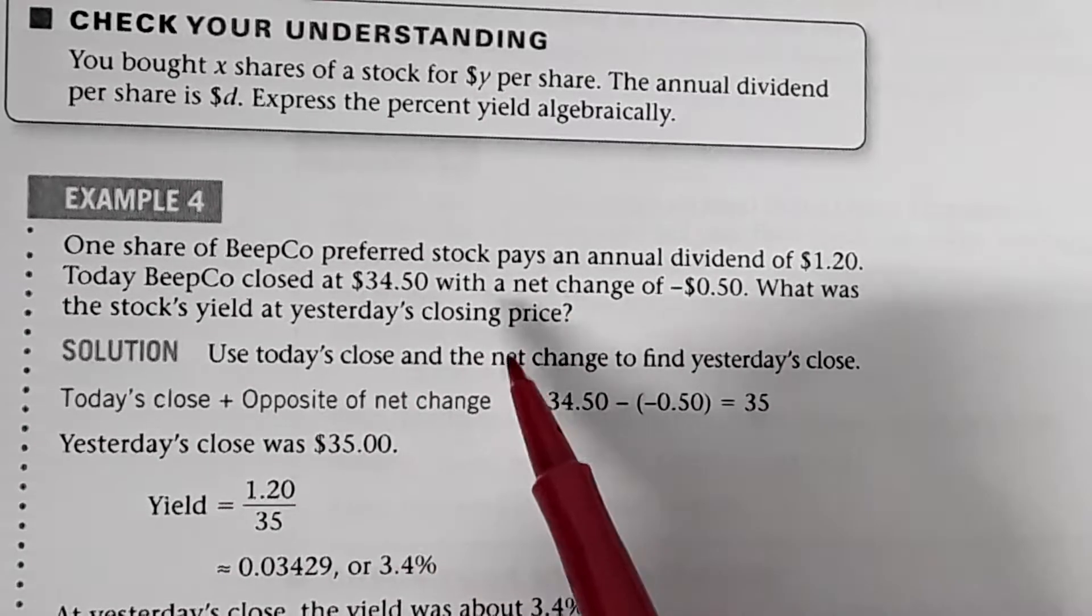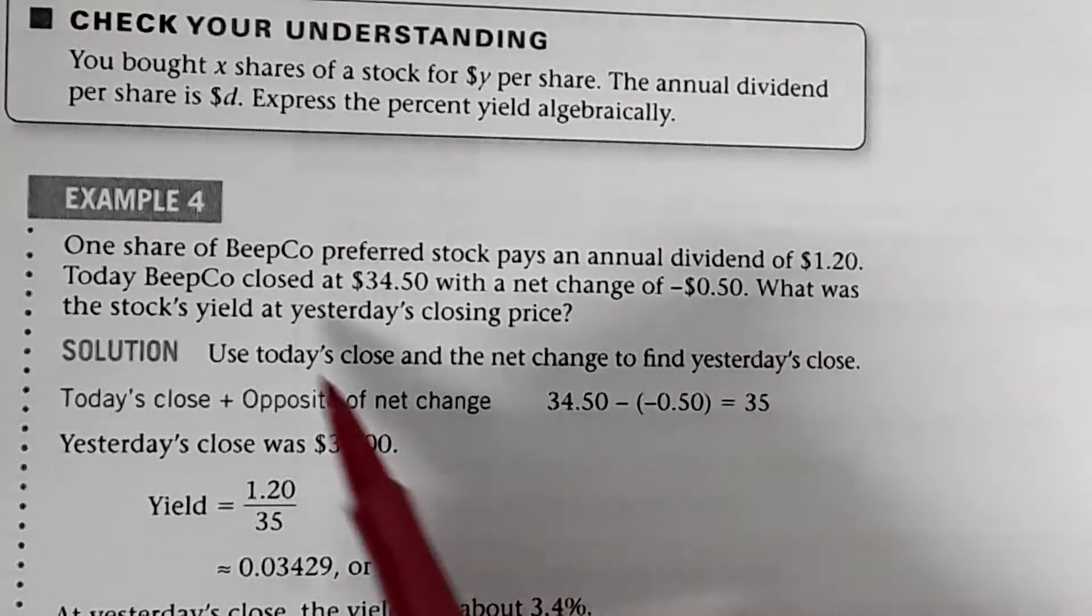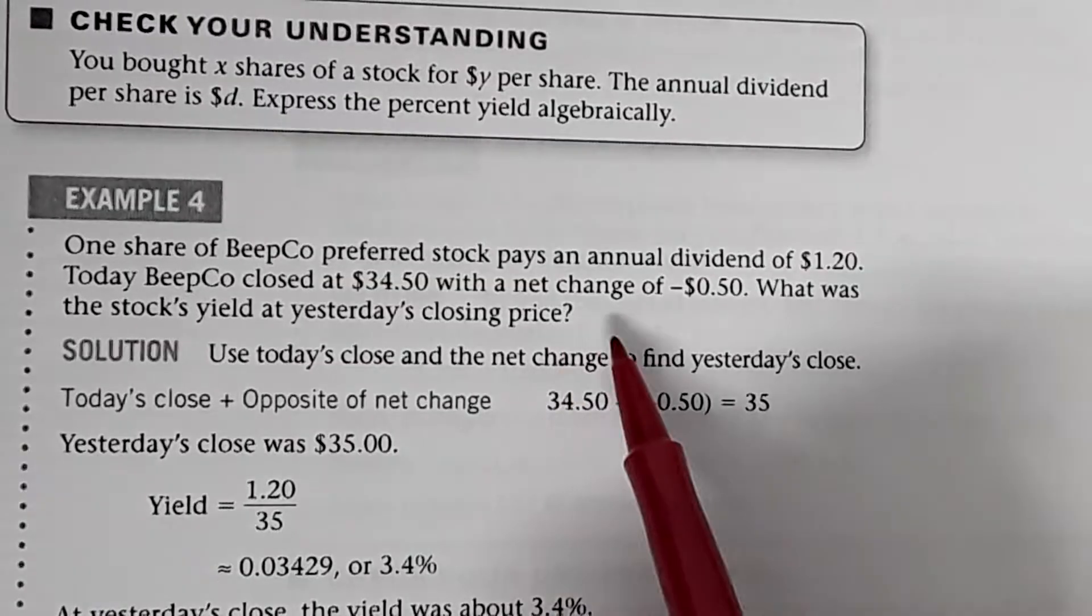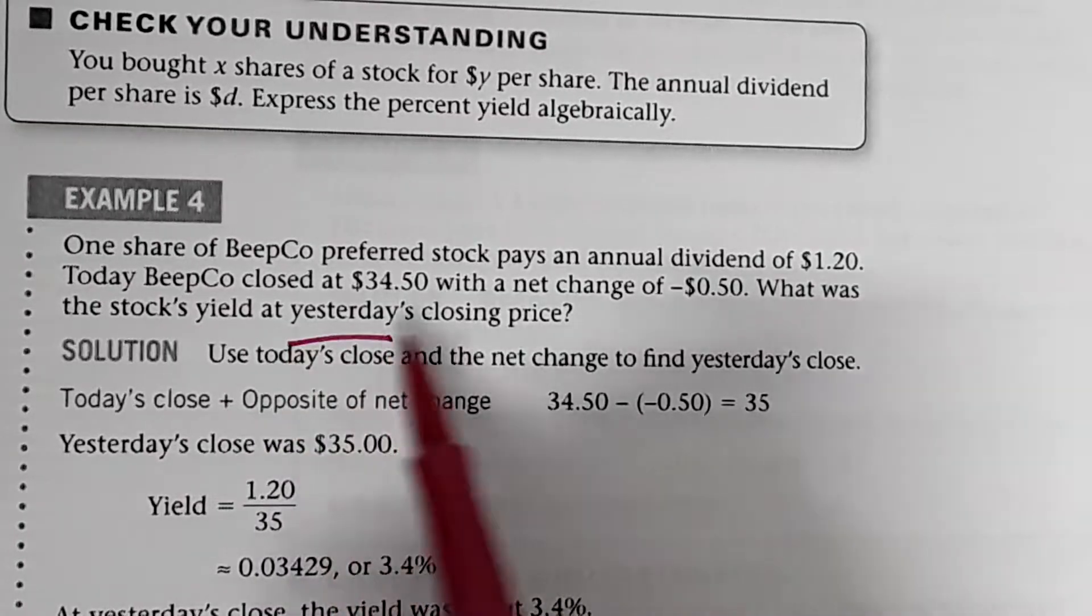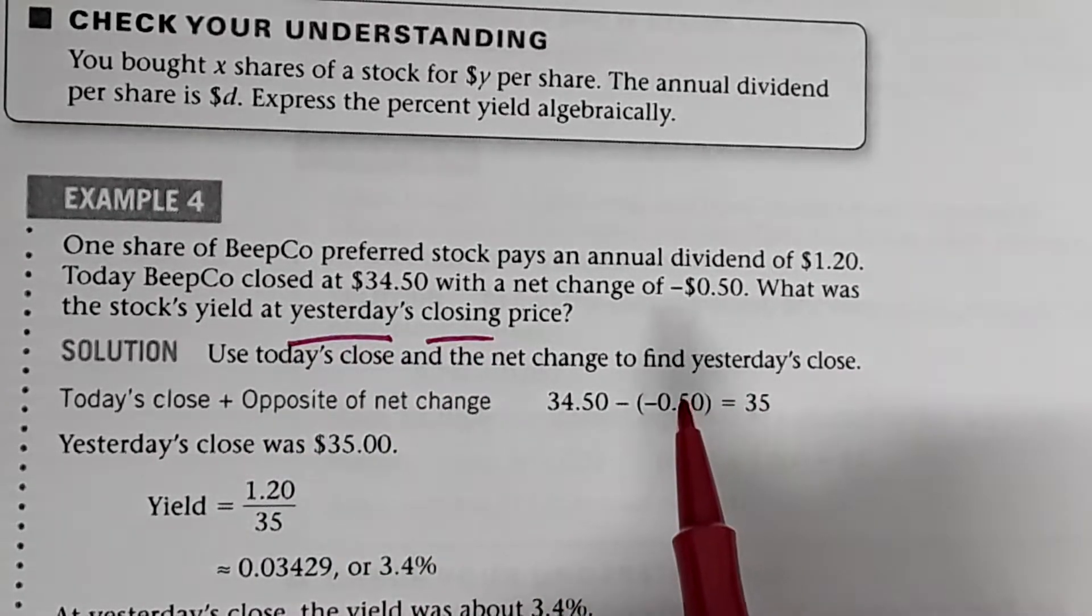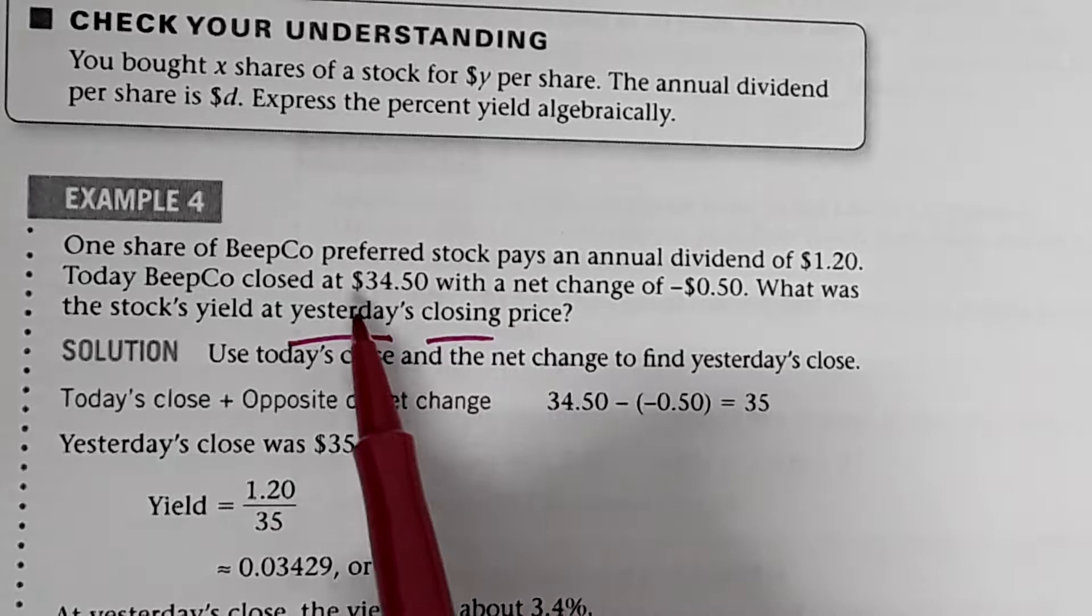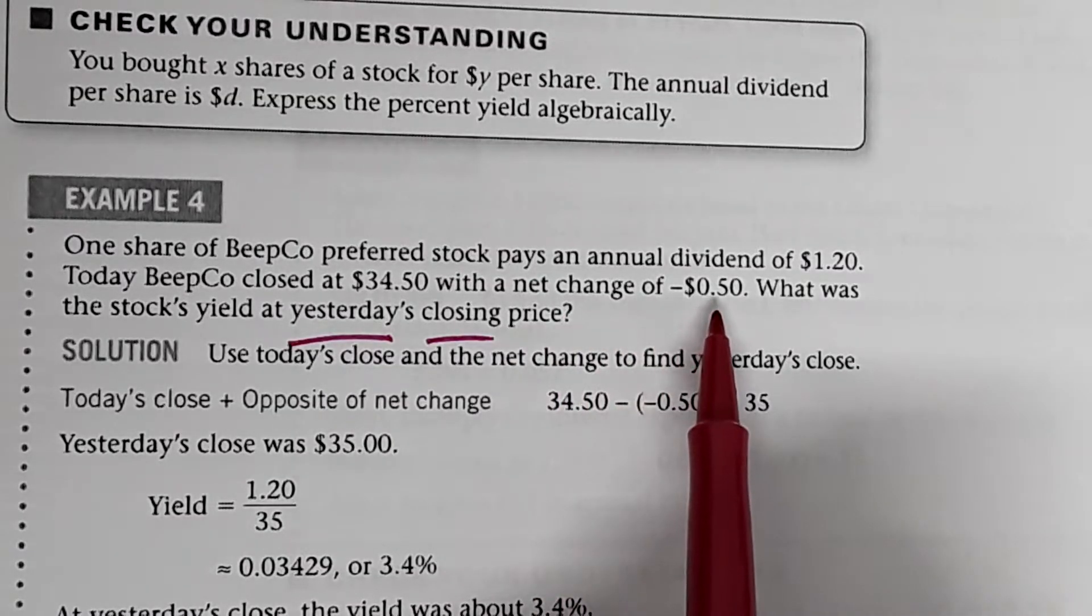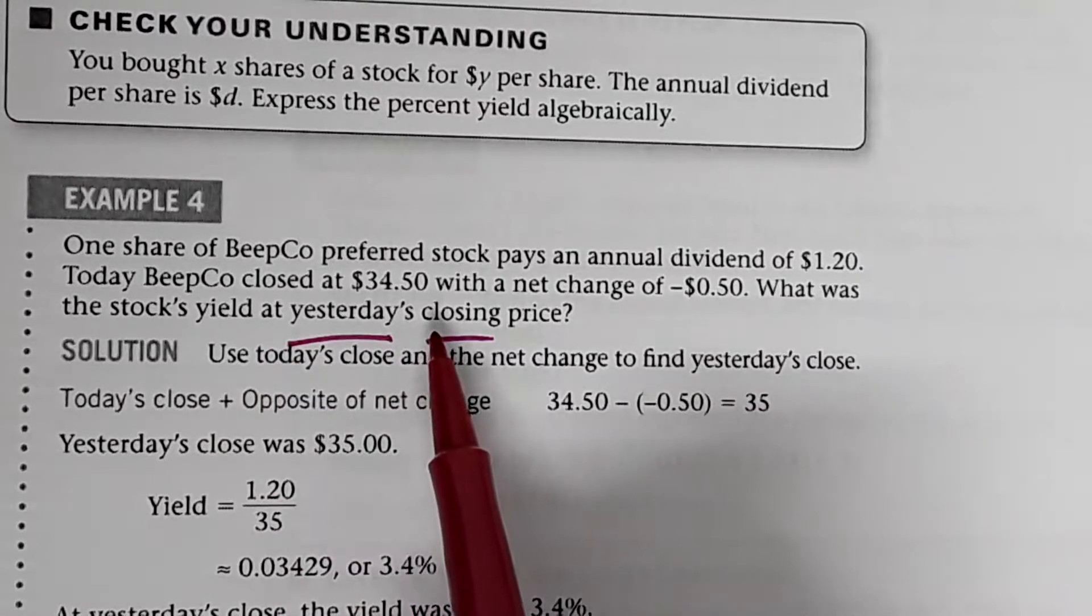One share of BEEPCO preferred stock pays an annual dividend of $1.20. Today BEEPCO closed at $34.50 with a net change of negative $0.50. What was the stock's yield at yesterday's closing price? Which it doesn't tell us, but it gives us the information to find that. So if it closed at $34.50 with a net change, that's today. It closed at $34.50 with a net change of negative $0.50. So it went down $0.50.